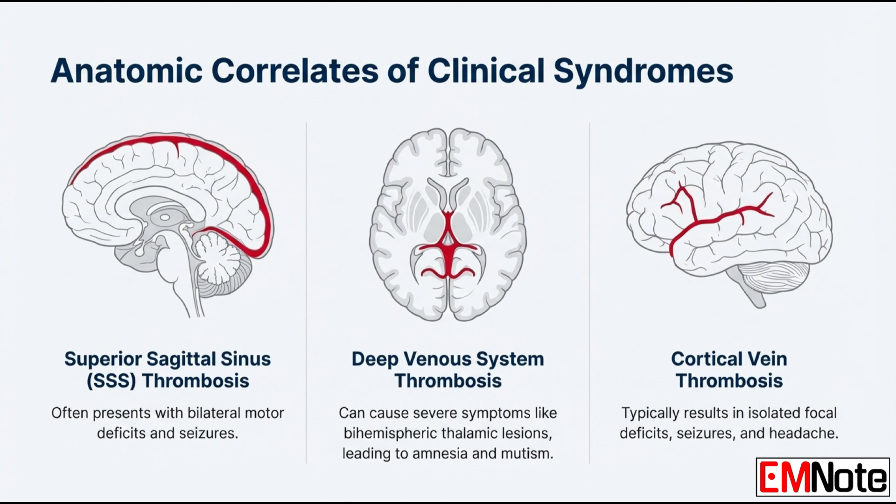Think about the drainage area. If the clot involves the superior sagittal sinus, it often causes bilateral signs — bilateral motor deficits and frequent seizures. But if the clot is in the deep venous system, that's where you see severe deep-seated symptoms like bihemispheric thalamic lesions or profound amnesia. That's the needle in the haystack.